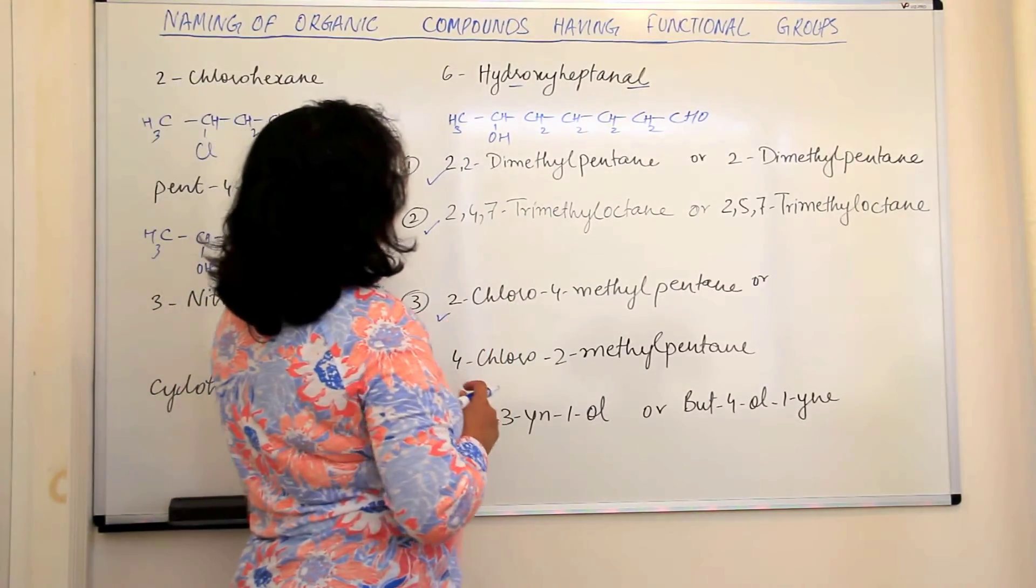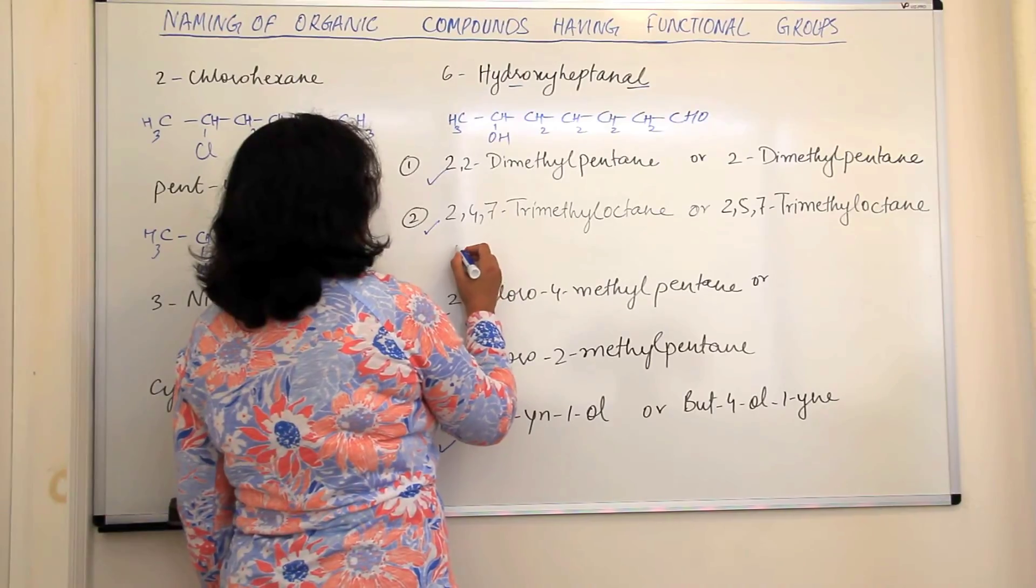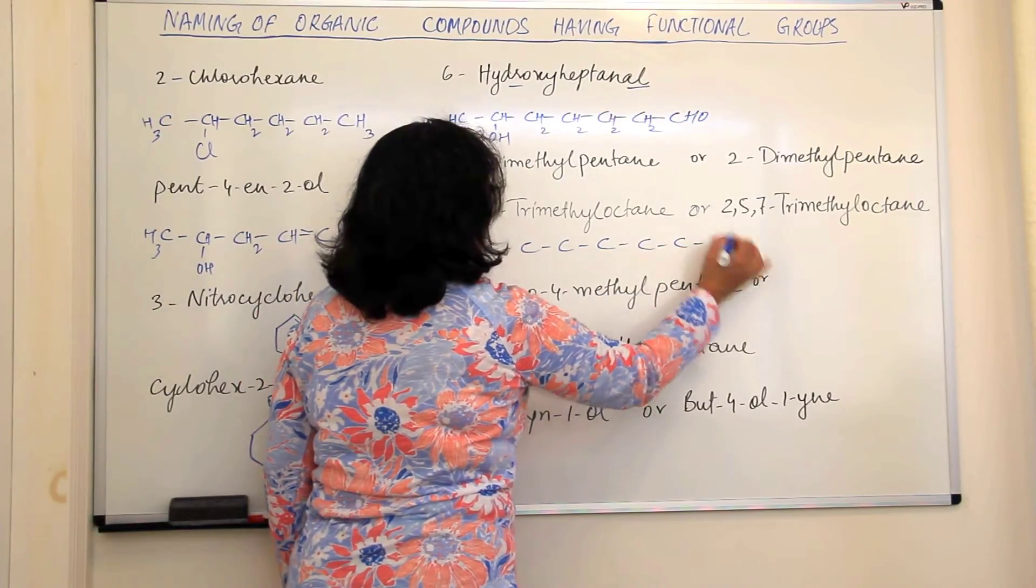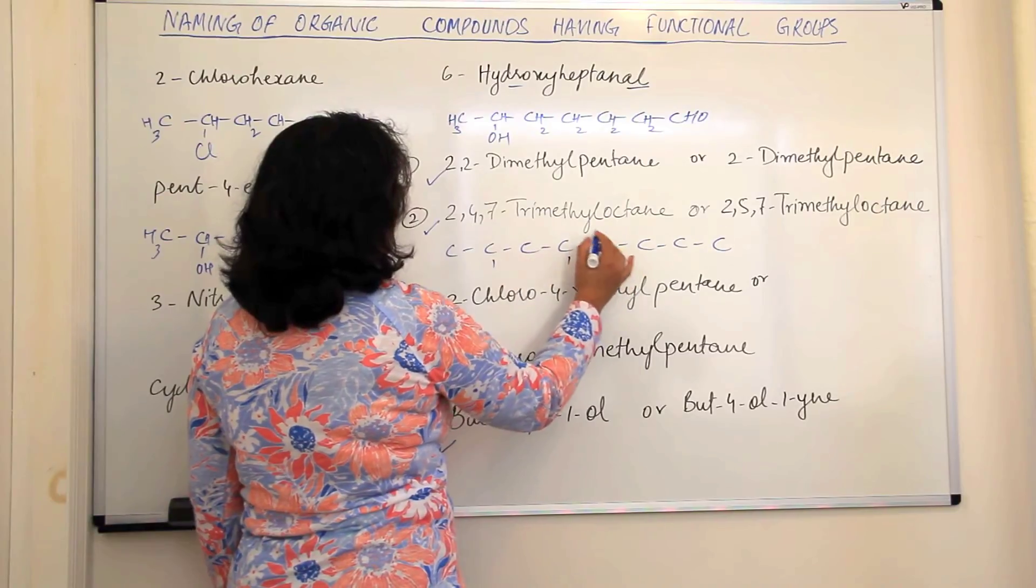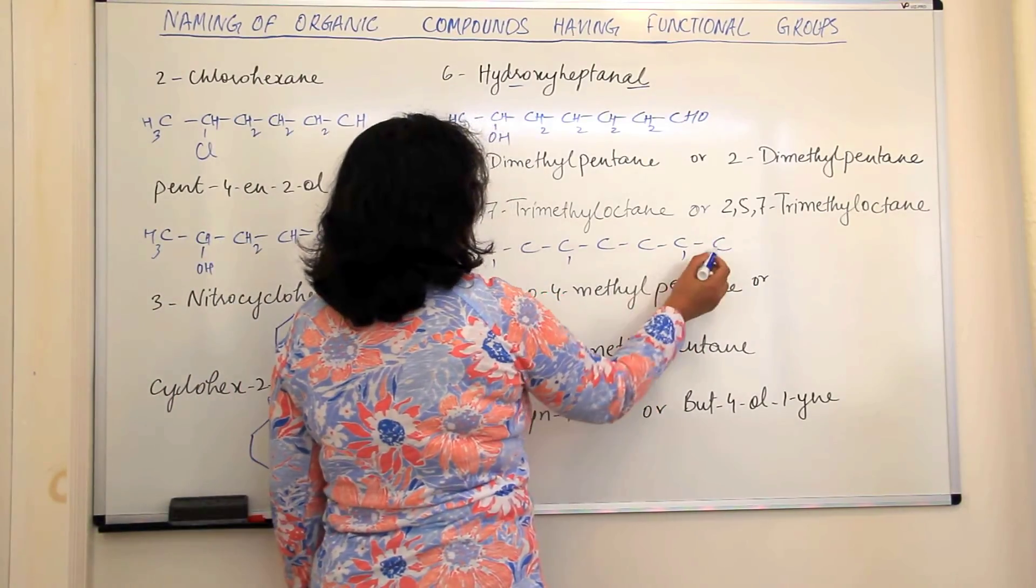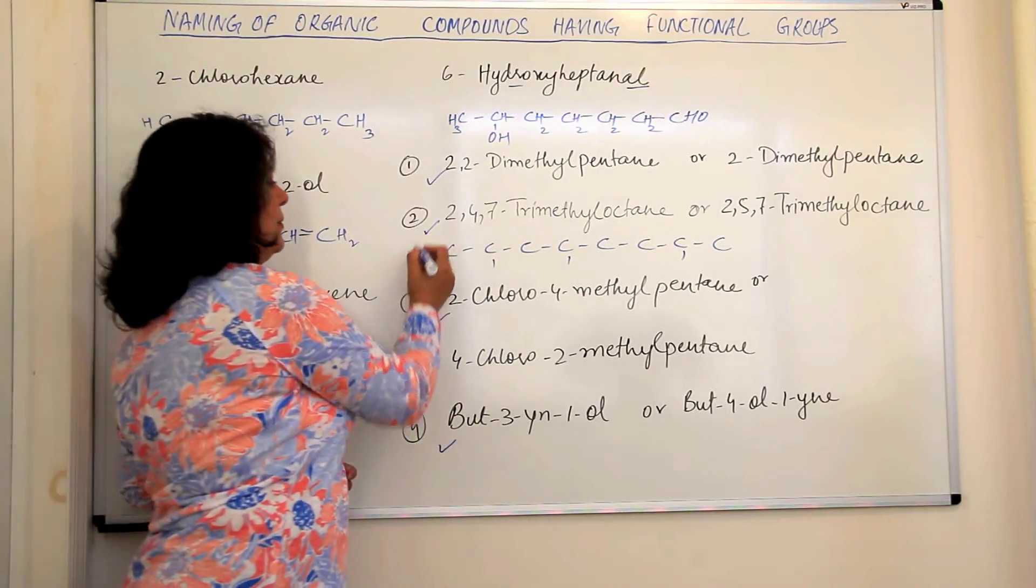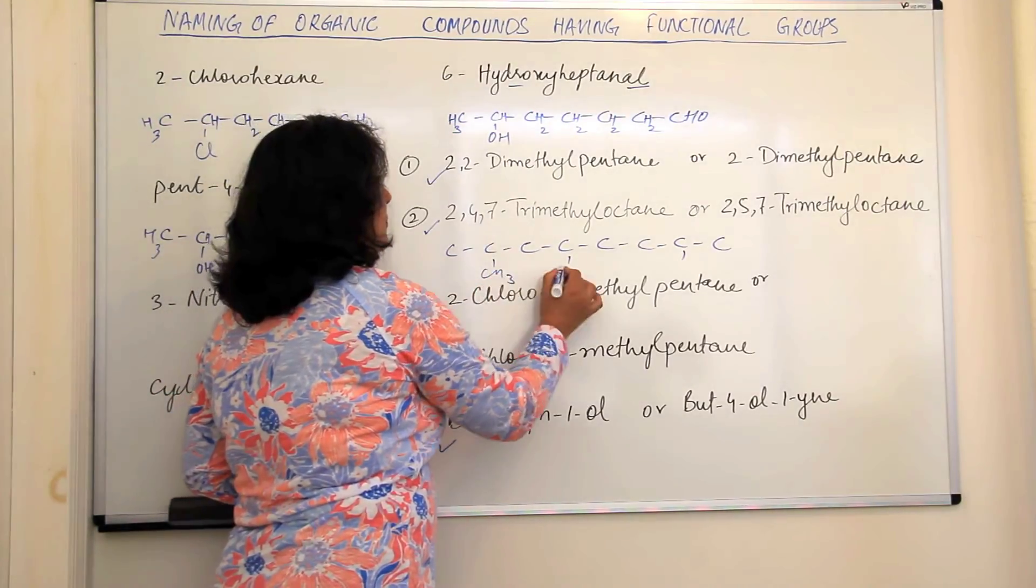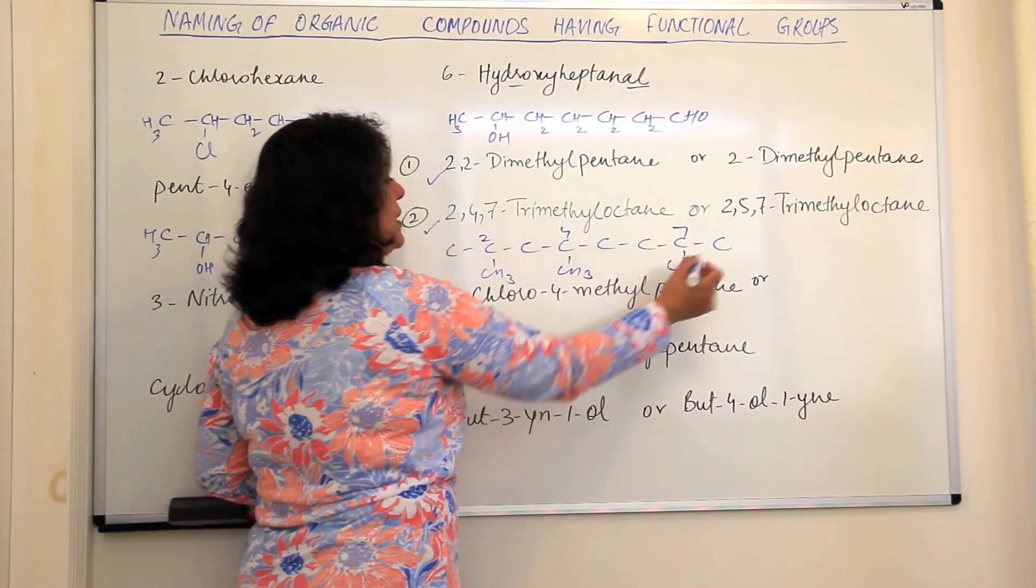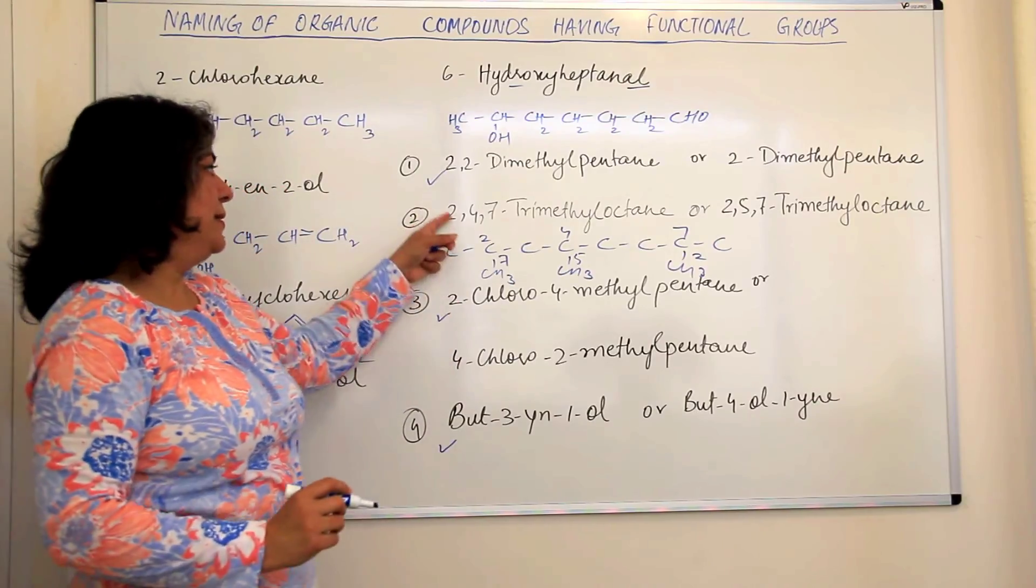2,4,7-trimethyl-octane or 2,5,7. I have a doubt of this. I would like to make the structure here. Octane would be 1, 2, 3, 4, 5, 6, 7, 8. 2,4,7. It's numbering from which side the lower locants are on this side. I hope you get me. 2,4, so these are the three methyl groups. On this side, the locants are 2,4,7 and on the opposite side, the locants are 2,5,7. Obviously, the numbering should be done from this side and hence, this name is right.